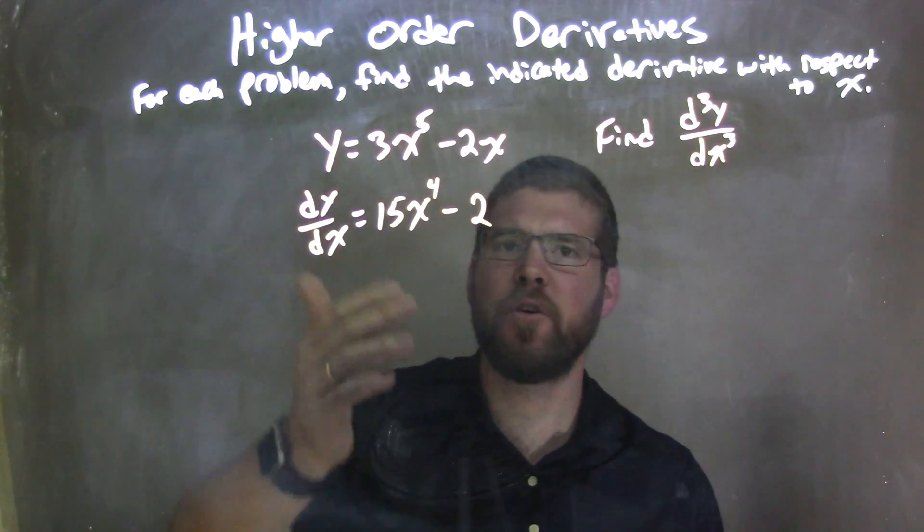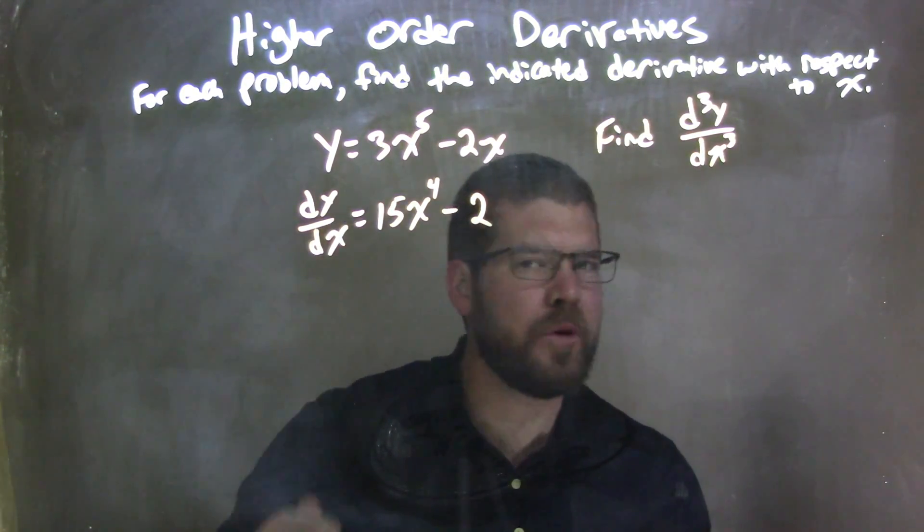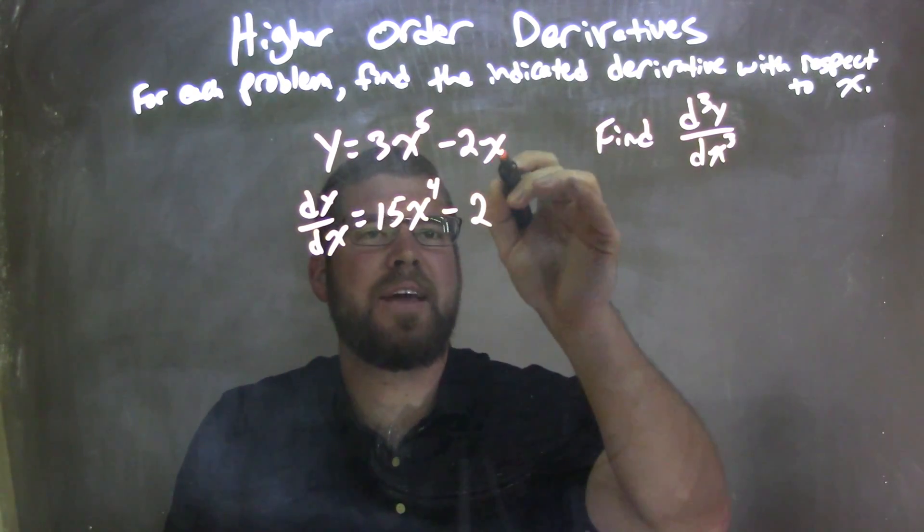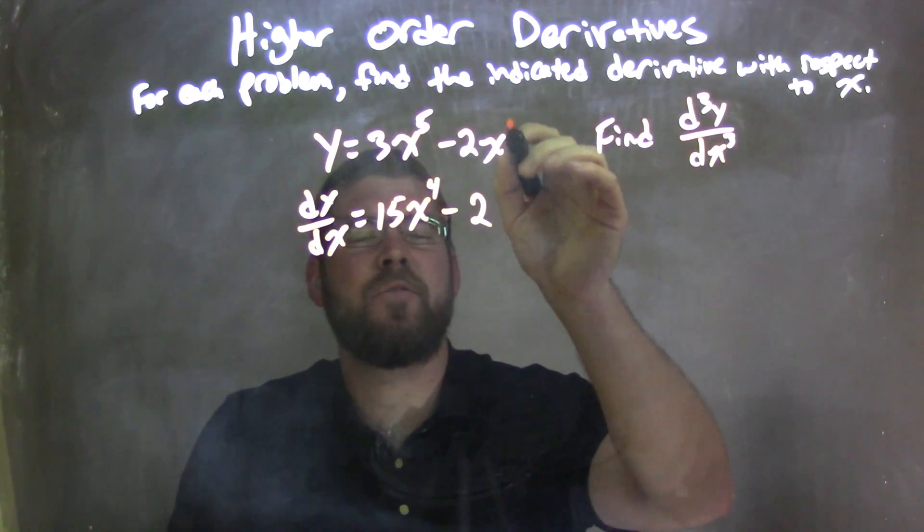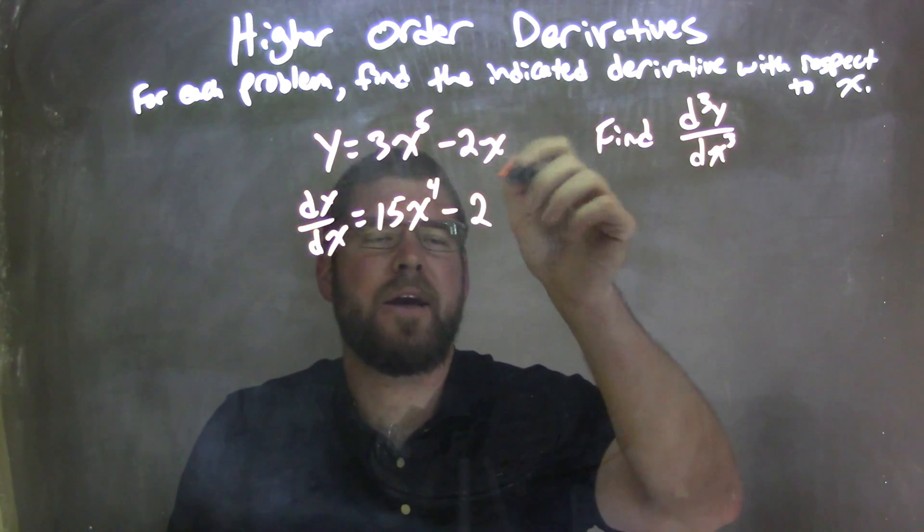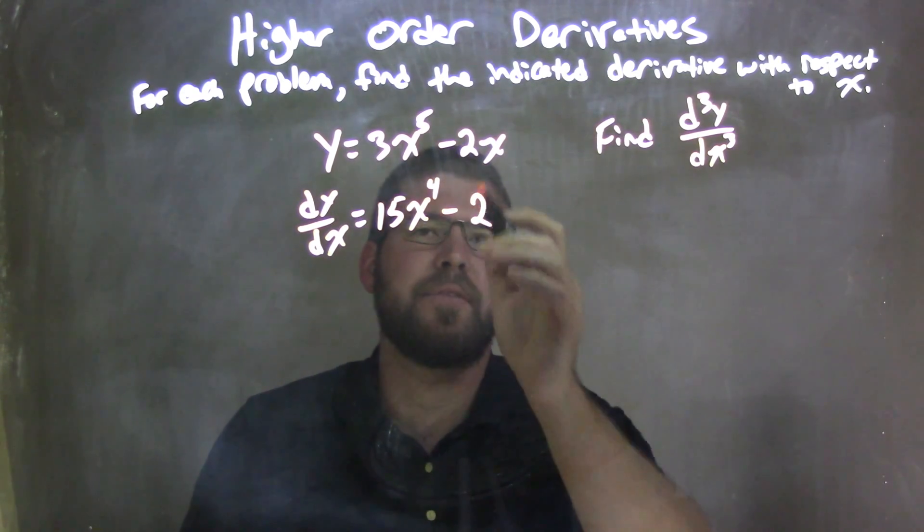So right now, we have our first derivative done, but we have two more to go. That x to get eliminated on the exponent from x to the first power, 1 came down, x to the 0, x to the 0 is just 1, 2 times 1 is 2.